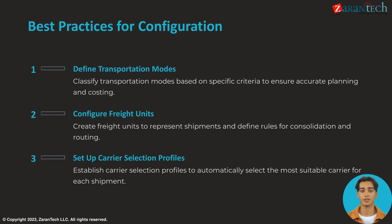When configuring SAP S/4HANA Transportation Management, best practices include defining transportation modes based on specific criteria for planning, creating freight units to represent shipments with consolidation rules, and setting up carrier selection profiles to automatically select the optimal carrier.